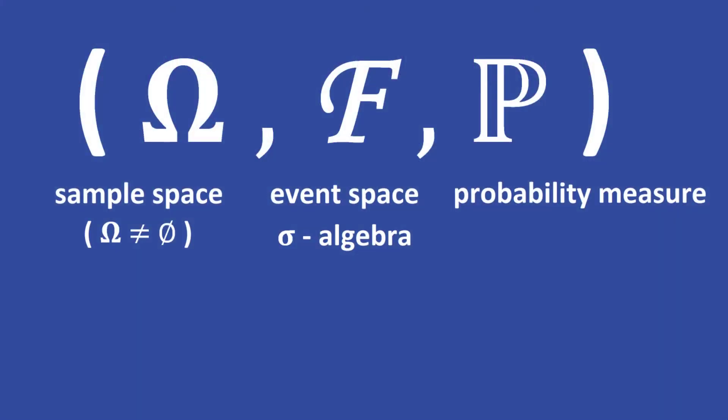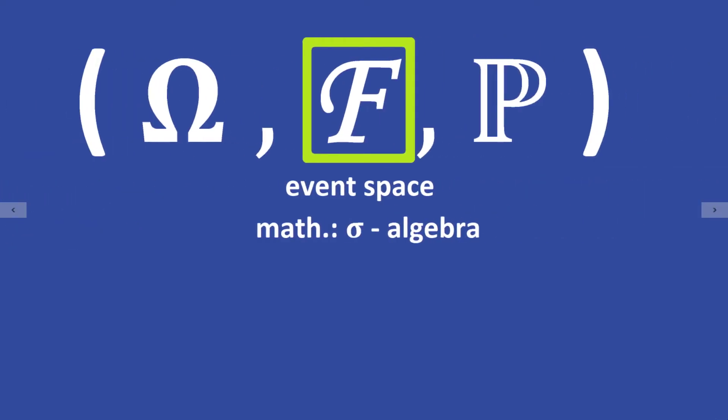In my last video I explained probability spaces. A probability space is a non-empty set omega together with a sigma algebra F and a probability measure P. In this video we will take a closer look at the second element of a probability space, the sigma algebra F.